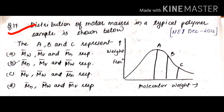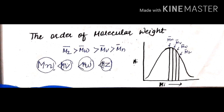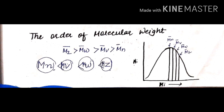Next question: the distribution of molar masses in a typical polymer sample is shown below; A, B, and C represent which molar masses? I have a graph to explain how A, B, and C correspond to different molar mass averages. Z average molar mass MZ comes last and is the highest, followed by MW (weight average), then MV (viscosity average), then MN (number average).